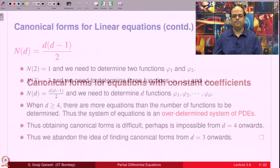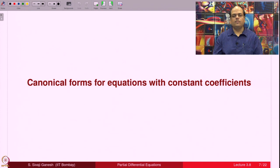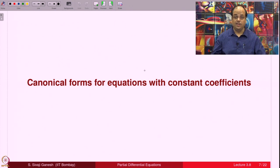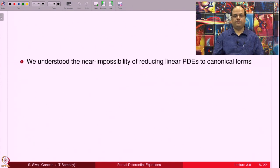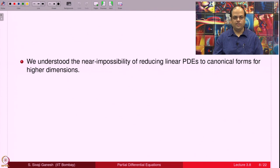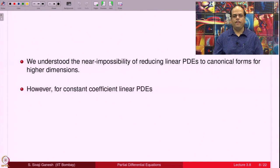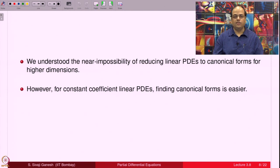Now, why are we discussing the constant coefficient case? When the equation has constant coefficients, some miracle happens — things are easy, you can find canonical forms. So we understood the near impossibility of reducing linear PDEs to canonical forms in higher dimensions. However, for constant coefficient PDEs, finding canonical forms is easier.